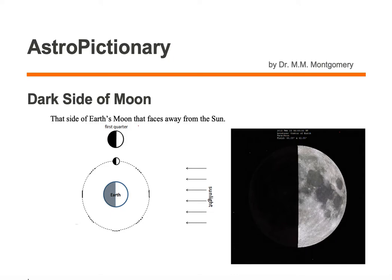The dark side of the moon is that side of Earth's moon that faces away from the Sun. Here on the right we have a sketch of the moon in its first quarter phase. What we see on the right hand side that's all lit up is called the light side of the moon.